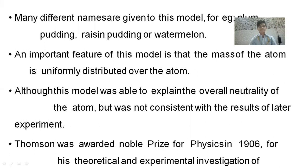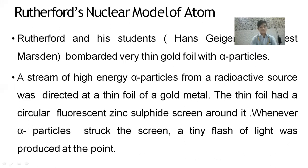Although this model was able to explain the overall neutrality of the atom, it was not consistent with the results of later experiments. This model was successful in explaining electrical neutrality — when positive and negative charges are balanced, the atom is neutral. But later experiments led to this theory being discarded. Thomson was awarded the Nobel Prize for Physics in 1906 for his theoretical and experimental work.